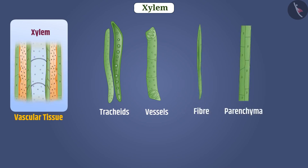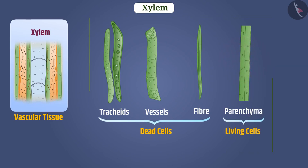Among these cells, xylem tracheids, vessels, and xylem fiber are dead cells and xylem parenchyma are living cells. All these cells are like tubules connected to each other.